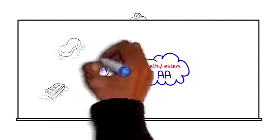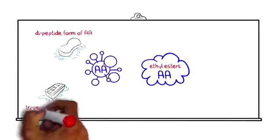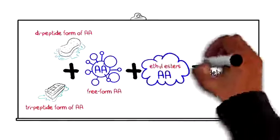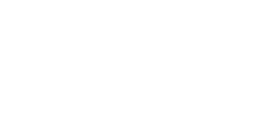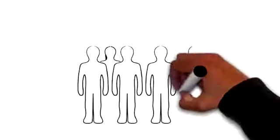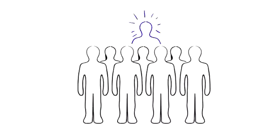Three forms of BCAAs, three absorption pathways, unparalleled deliverability. At this point, you can probably see how Biotrust BCAA matrix stands head and shoulders above other BCAA products on the market.